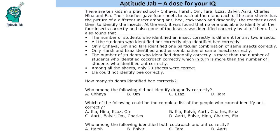Hello everyone, welcome to Aptitude Jab. This question says that there are 10 kids in a play school. Their teacher gave 4 sheets to each of them, and each of the 4 sheets has a picture of a different insect among ant, bee, cockroach and dragonfly. The teacher asked them to identify the insects, and at the end it was found that no one was able to identify all 4 insects correctly, and also none of the insects was identified correctly by all of them. Certain conditions are given: the number of students who identified an insect correctly is different for any 2 insects, and all the students who identify ant correctly also identified bee correctly.